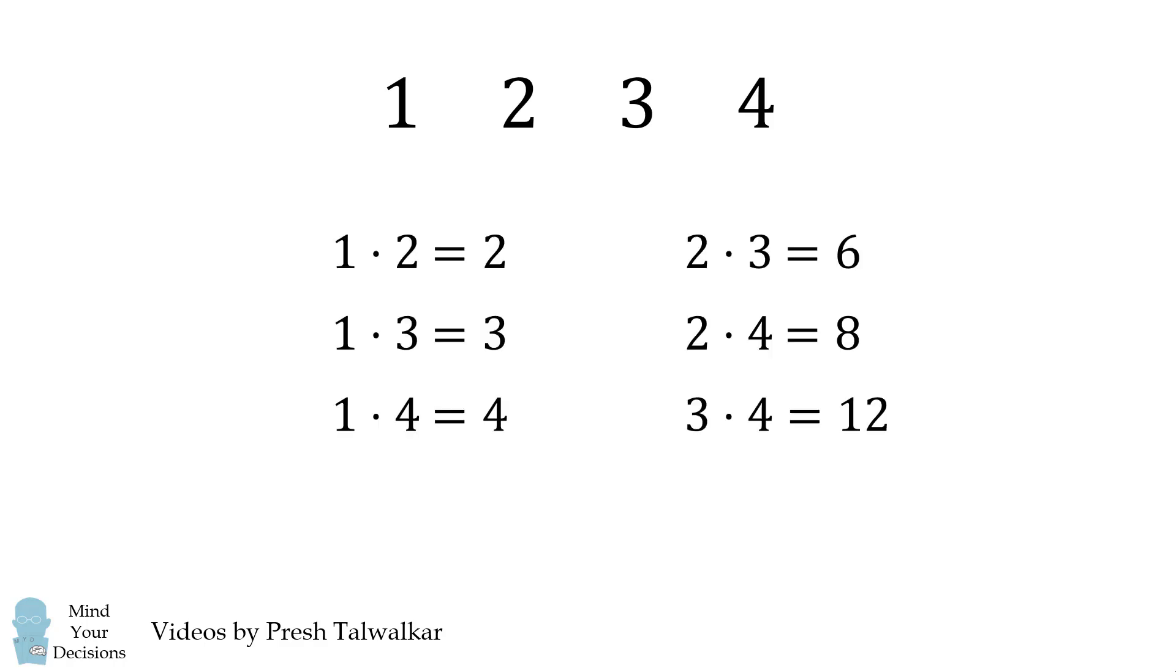So let's go back to our original example of 1, 2, 3, and 4. The trick is to consider the product of 1, 2, 3, and 4, which is equal to 24.